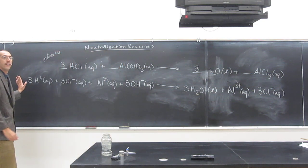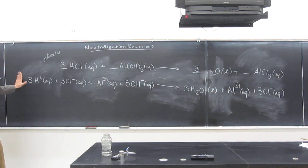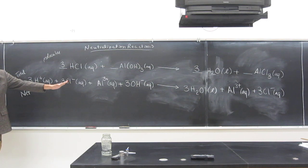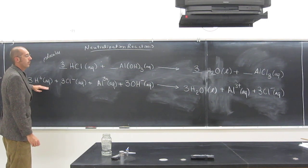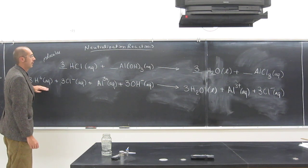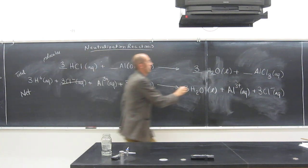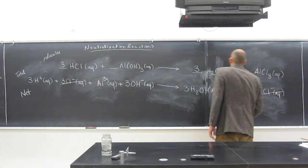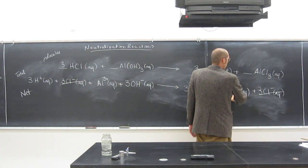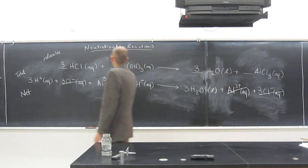So this is called the total ionic equation. Now let's do the net ionic equation. Net ionic equation, you just cancel out everything that's on both sides. H plus on both sides? No. 3 Cl minus on both sides? Yes, cancel. And Al 3+ aqueous on both sides? Yes, cancel.